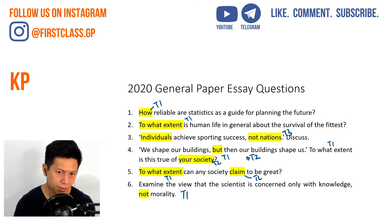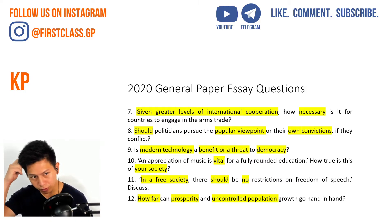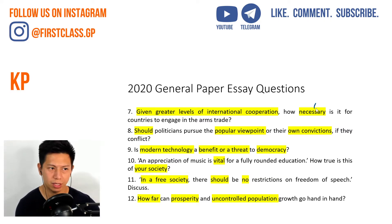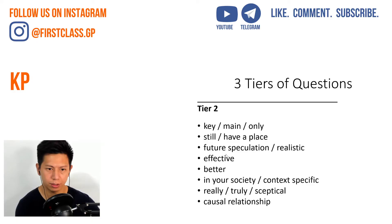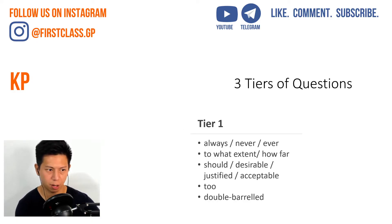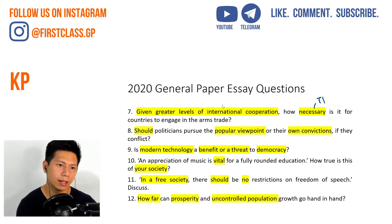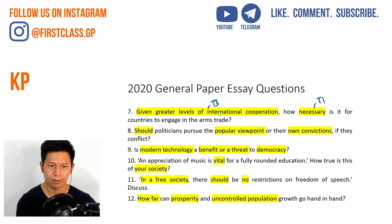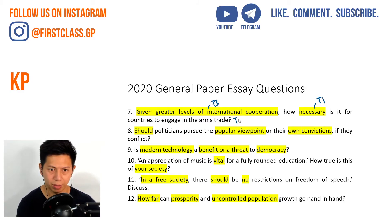Some of you might say it's a comparison question, but I see it more as double-barreled. Question 7: 'Given greater levels of international cooperation, how necessary is it?' The 'how necessary' makes it a tier 1 desirable/should type question. But 'given greater levels of international cooperation' is a conditional element — tier 3. So combining them, the overall difficulty is tier 3.